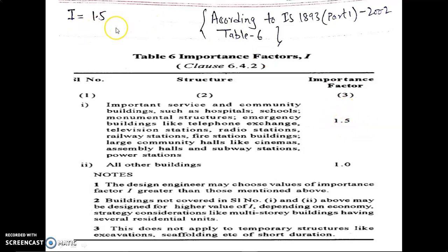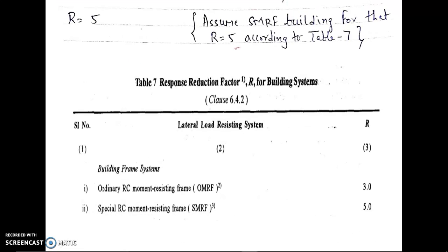Now we have to find the response reduction factor R. In our question no reduction factor value is mentioned, so we assume a special RC moment resisting frame, for which the reduction factor is 5. Here R = 5. If nothing is mentioned in the question, you have to assume this value.